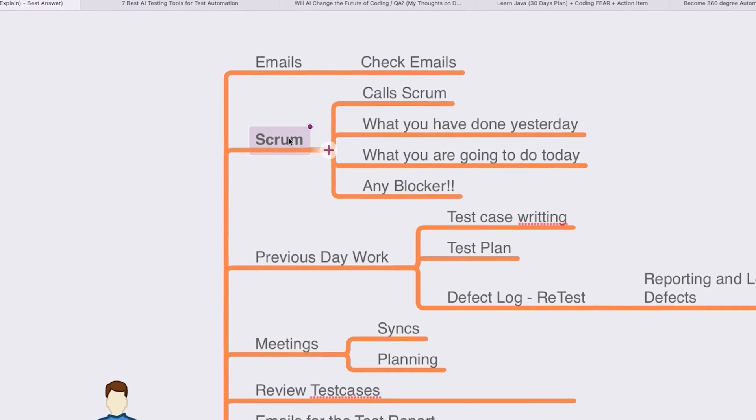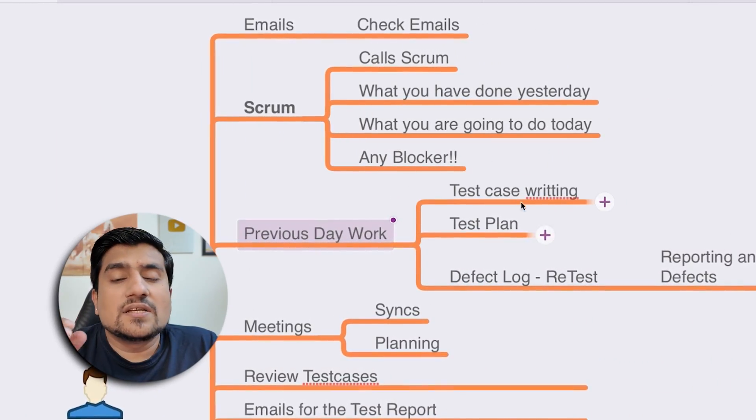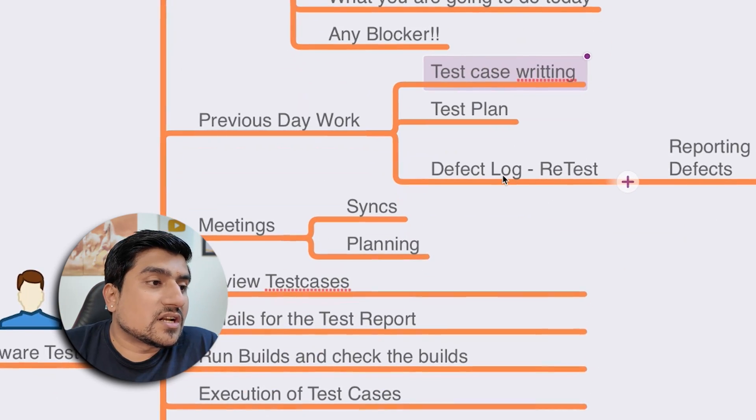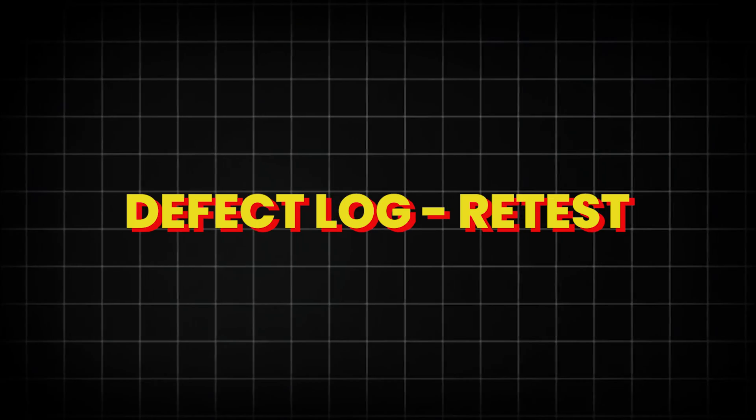You can talk about scrum. If there is a scrum call — most of you will probably be working in an agile environment — mention your scrum updates: what you did yesterday, what you are going to do, and any blockers. Also mention what the previous day's work was — for example, test case writing, test plan, defect log, retest — anything you can mention. All these answers are valid.